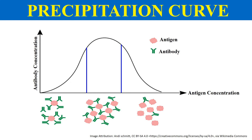This is the precipitation curve, plotted to show the zone where maximum precipitation occurs. Antibody concentration is on the y-axis and antigen concentration is on the x-axis. The light pink shapes represent the antigen while green represents the antibody. When we add antibody to an antigen mixture, a curve is formed known as the precipitation curve. At the starting point, when antibodies are in excess, they will bind to antigen but there will be no precipitation.